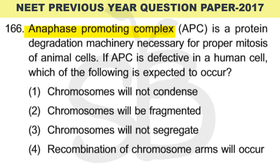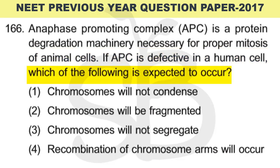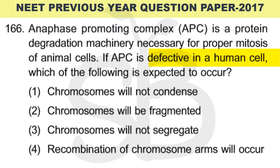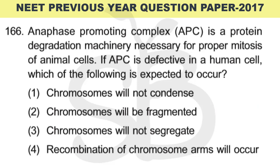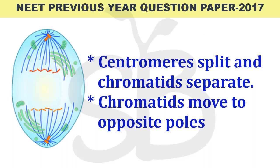Question number 166: Anaphase Promoting Complex, or APC, is a protein degradation machinery necessary for proper mitosis of animal cells. If APC or Anaphase Promoting Complex is defective in a human cell, which of the following is expected to occur?